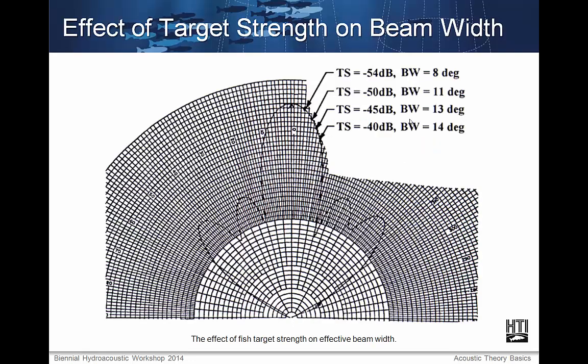Here is an example of the target strength of a single target at different beam angles. You can see that as the angle the target makes with the transducer increases, the target strength decreases.